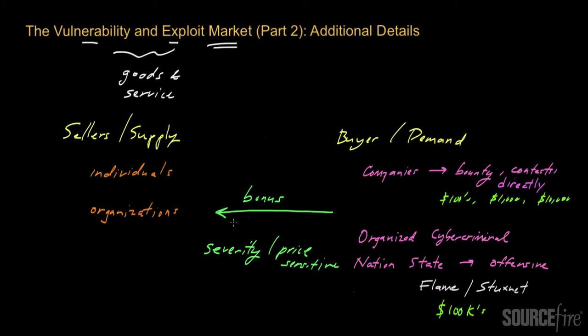There are also more complex pricing models in place. For example, some suppliers charge potential buyers a subscription fee just for the privilege of being able to browse their catalog. The idea is that the supplier has a catalog of vulnerabilities, the buyers must pay a fee just to browse that catalog, and then if they're interested in any particular vulnerability they can pay an additional fee on top of the subscription to get access to exploit code for that vulnerability.